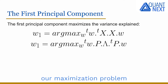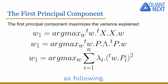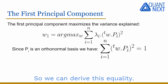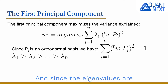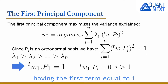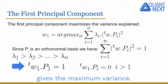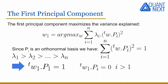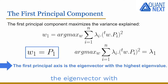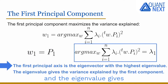Going back to our maximization problem and replacing with the spectral decomposition of omega, we can rewrite the problem as follows. Since P_i is an orthonormal basis and the vector of weights is a unit vector, we can derive this equality. And since the eigenvalues are ranked in decreasing order, we see that having the first term equal to one and the others equal to zero gives the maximum variance. So W1 is equal to P1: the first principal axis is the eigenvector with the highest eigenvalue, and that eigenvalue gives the variance explained by the first component.